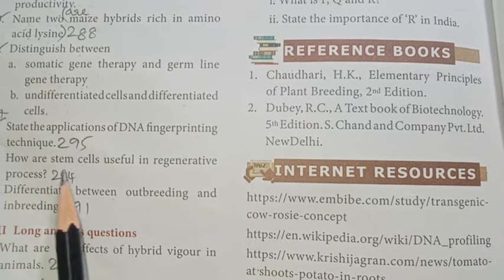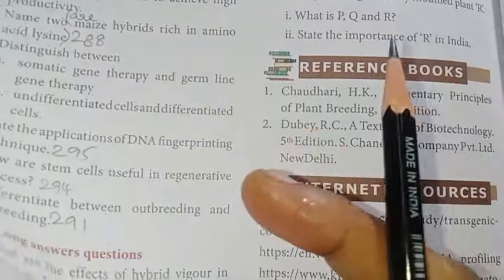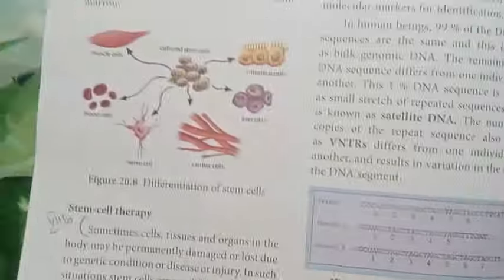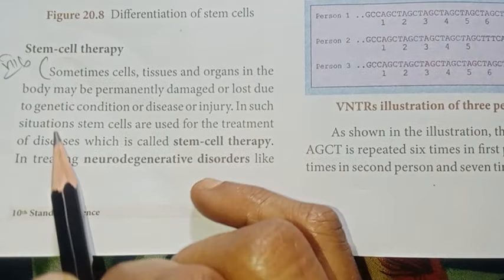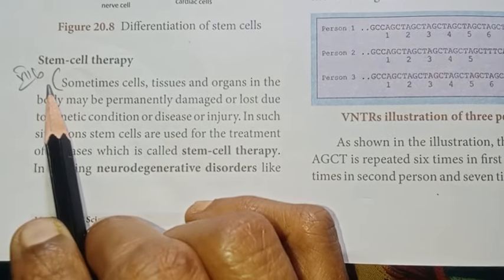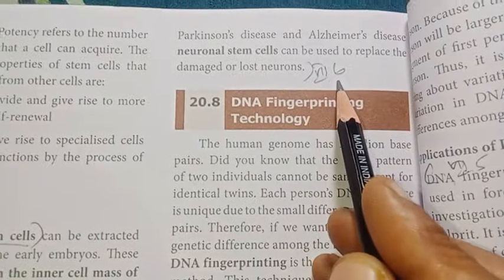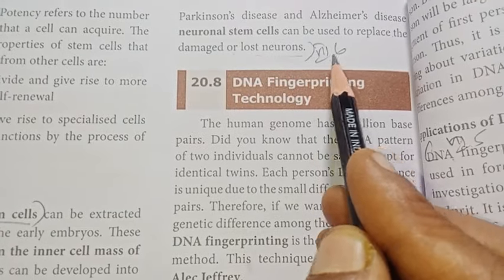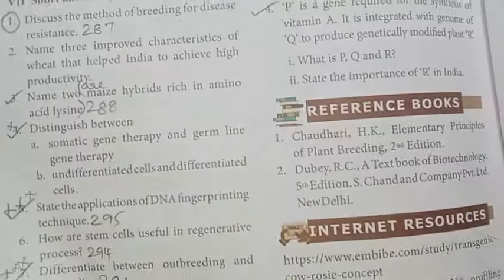Number six: How are stem cells useful in the regenerative process? Page 294. Stem cell therapy — sometimes cells, tissues and organs are damaged or lost, including neurons. Refer to the paragraph on stem cell therapy on the right side of page 294 for the full answer, covering point by point.